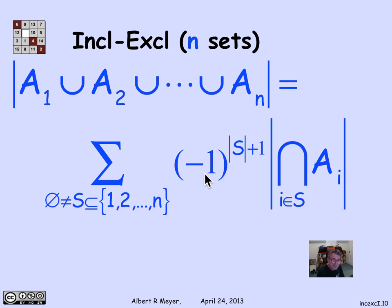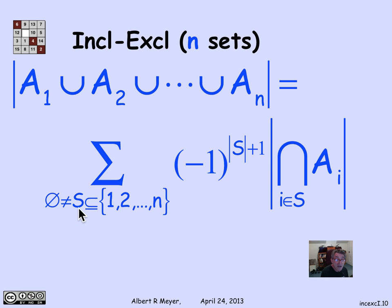Let's read the general formula carefully. It's a sum over every possible non-empty subset S of the indices 1 through n. The sum ranges over S in any order — typically summing first over subsets of size 1, then size 2, and so on. For each S, we take the size of the intersection of those A_i's specified by the index set S.